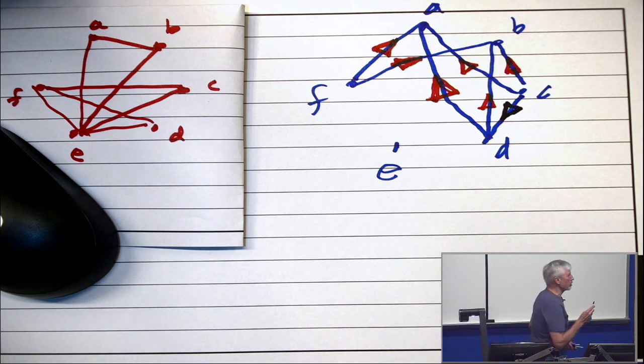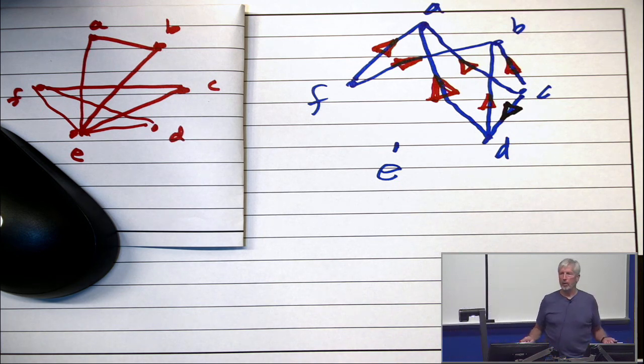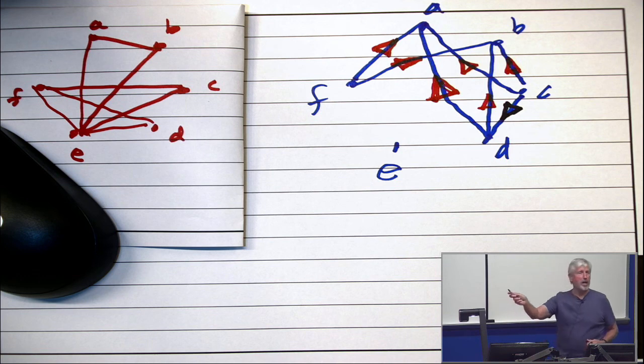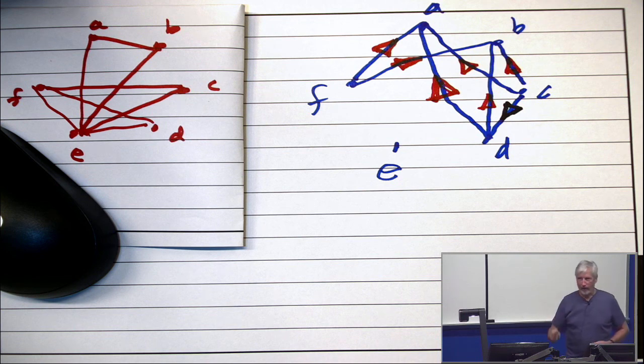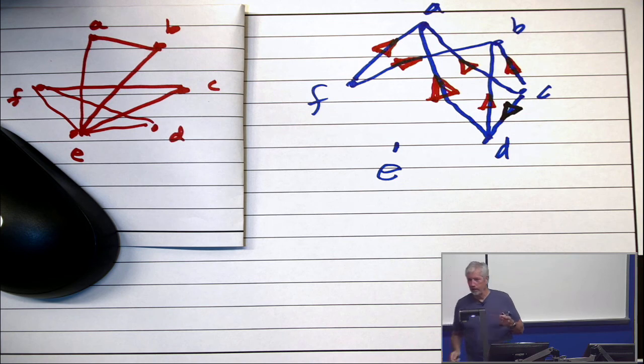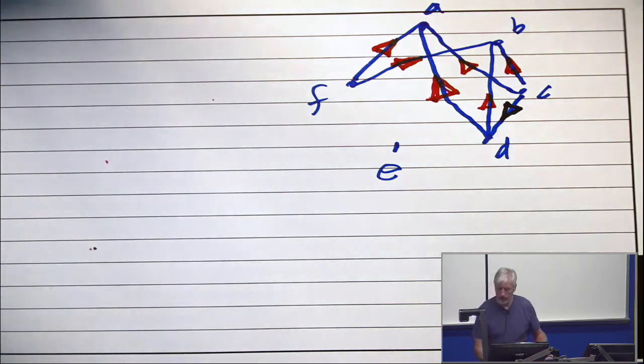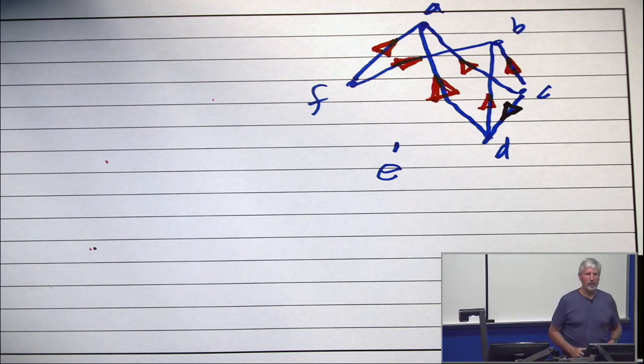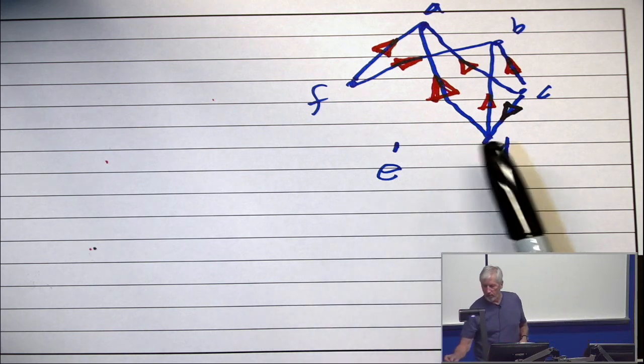And now, we have a transitive orientation of this graph. Is the original graph an interval graph? Yes or no? A really good answer. It could be. It might be. We don't know. It passed the first test. It's got to pass two tests. All right. Now, that's a transitive orientation. A transitive orientation determines a POSET.